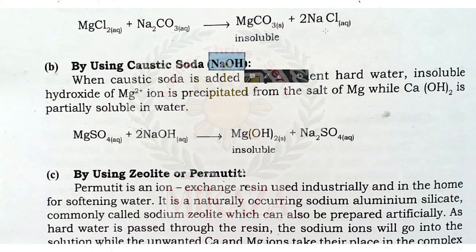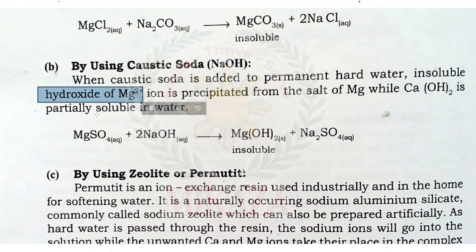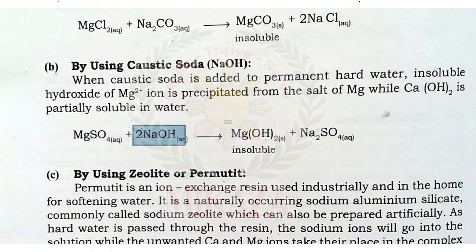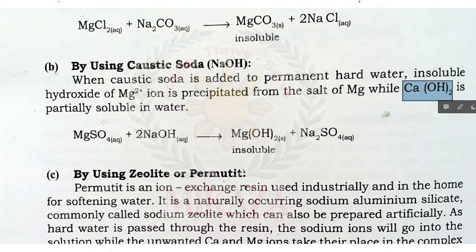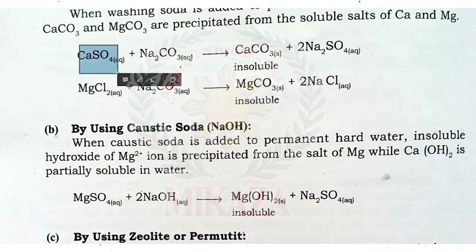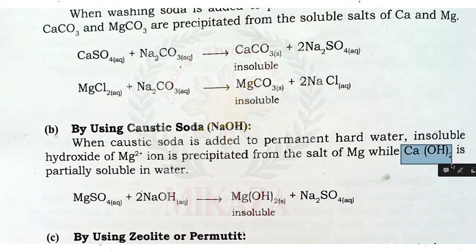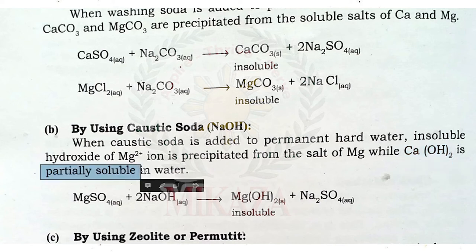Caustic soda is sodium hydroxide (NaOH). When caustic soda is added to permanent hard water, insoluble magnesium hydroxide is precipitated from magnesium salts. When magnesium sulfate reacts with caustic soda, magnesium hydroxide — which is insoluble — is produced and clean water is removed. However, if reacted with calcium chloride or calcium sulfate, calcium hydroxide is produced, which is only partially soluble in water, so some hardness will remain and the water will not be fully purified.